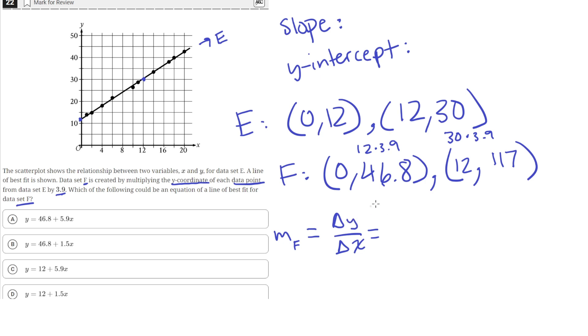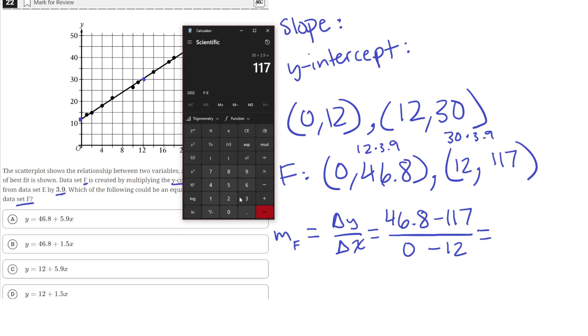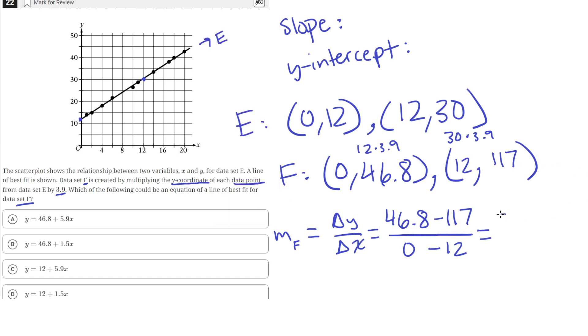So, the change in Y, we just need to subtract the two Y values from each other. So, 46.8 minus 117. And then the change in X, we subtract the two X values from each other. So, 0 minus 12. So, now let's just calculate this. 46.8 minus 117 gives us negative 70.2.